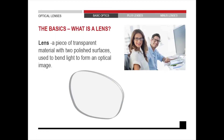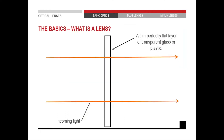The first thing we want to discuss is: what is the definition of a lens? We are prescribing them all the time, but what exactly is it? A lens is a piece of transparent material with two polished surfaces used to bend light to form an optical image. I want you to look at this sketch — this is a piece of a window viewed from the side, and you can see that the front surface and the back surface run parallel to each other.